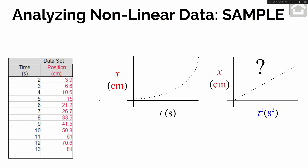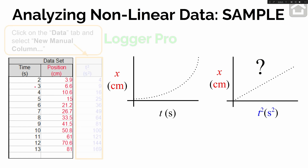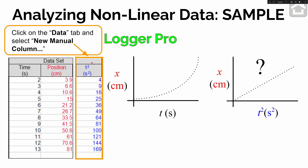Going back to our data: to make a position versus time squared graph, we already have a column of position values, but we need a new column of time squared values. That means taking each time value and squaring it — so 2 squared equals 4, 3 squared equals 9, and so on. The units of time squared would be seconds squared, because if you're squaring the variable, you also have to square the units.